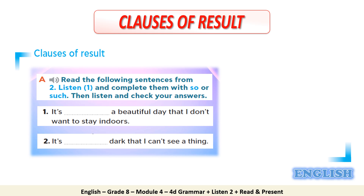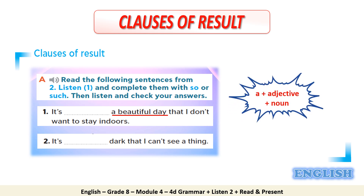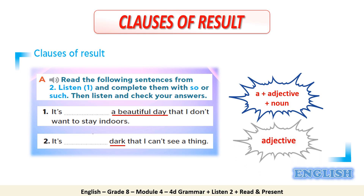Read them and underline the word or words that follow the blank. In the first sentence, we have 'a beautiful day' after the blank — the article 'a', an adjective plus a noun. In the second sentence, we have 'dark' after the blank. Dark is an adjective.